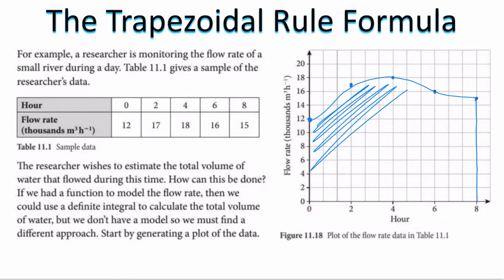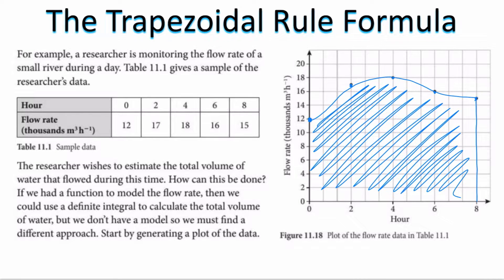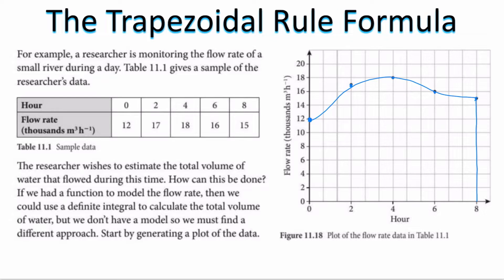To find the total area under this curve, previously we would write a definite integral with a lower bound of zero and an upper bound of eight, along with an equation representing the function. Right now we don't have that equation, so we can't do that. Instead, we are going to create trapezoids. I can go ahead and create a trapezoid going straight down, and I'm going to use the x-axis as the height of the trapezoid. The height of each trapezoid is going to be two, and I'm going to connect these points with a straight line to give me a trapezoid.